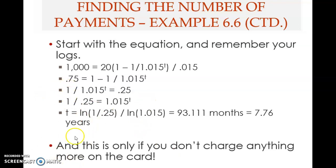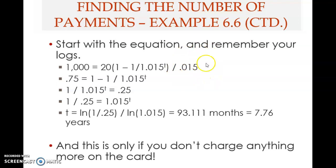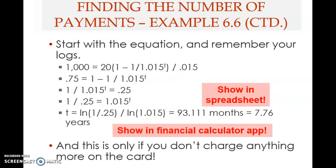This means it takes more than seven years — just for borrowing one thousand dollars — and only if you don't charge anything more on the card. This illustrates that using a credit card and paying only the minimum amount takes a very long time because the interest rate is extremely high. The rate was 1.5% per month, which on an annual basis is very high — we'll see that later in the chapter.